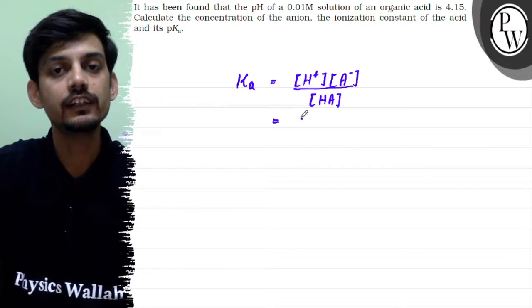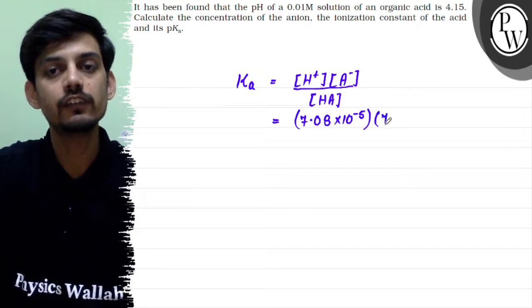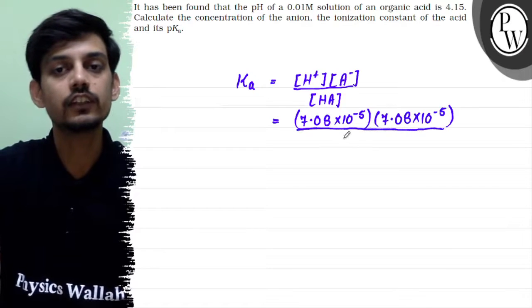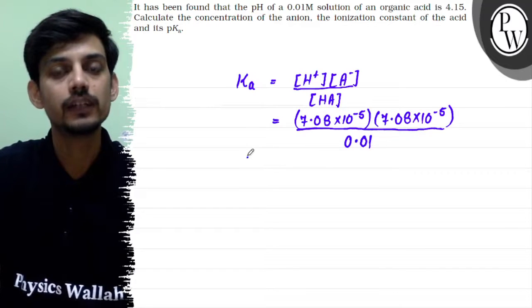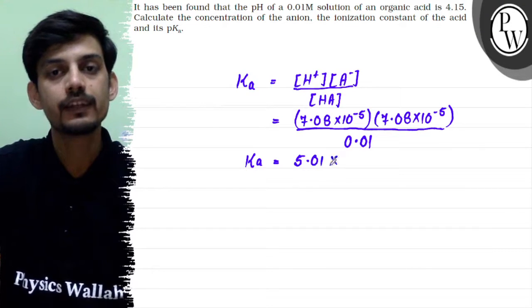Ka we have to calculate: H plus is 7.08 times 10 to the power minus 5, A minus is also the same value 7.08 times 10 to the power minus 5, divided by HA, and the concentration of HA is approximately 0.01 or 10 to the power minus 2. When we solve, Ka will be equal to 5.01 times 10 to the power minus 7.